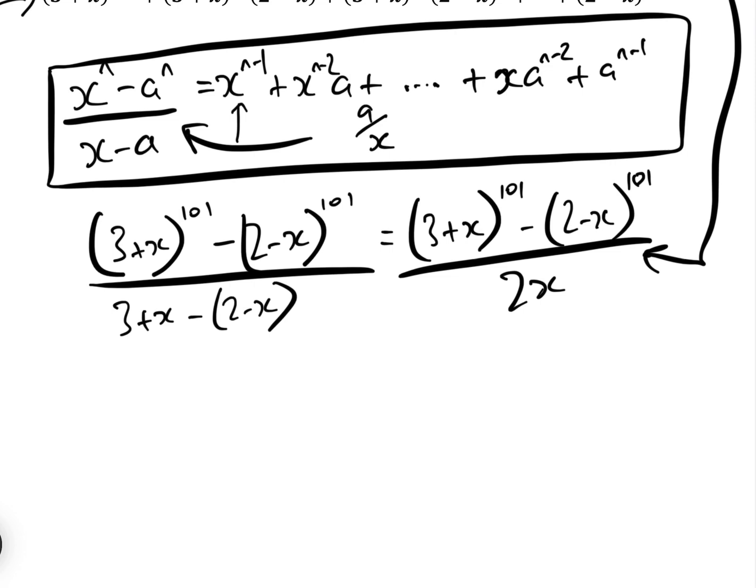So what we're going to use is the formula: coefficient of x to the r in an expansion of p plus x to the n is nCr p to the n minus r x to the r.